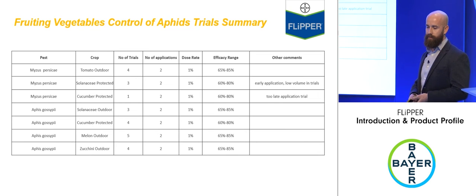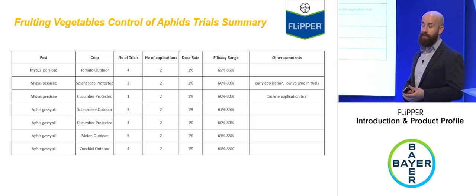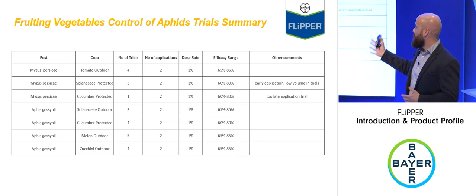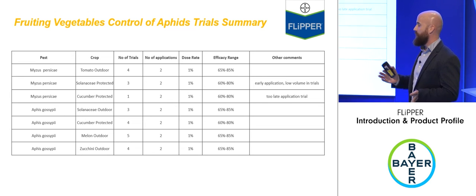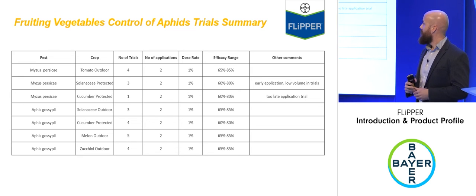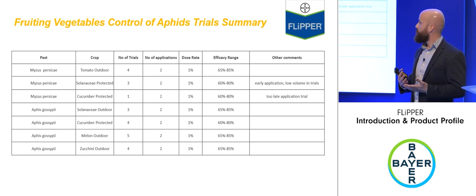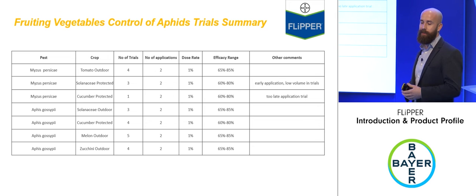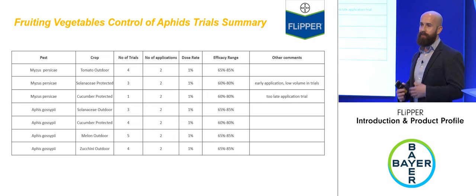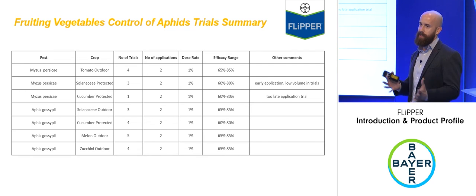Moving to aphid control in tomatoes, cucumbers, melons, and courgettes — when application is done correctly, across four trials with two applications at one percent, efficacy ranges from 65 to 85 percent control. That's quite consistent and represents the kind of levels you can expect to see in your crops.